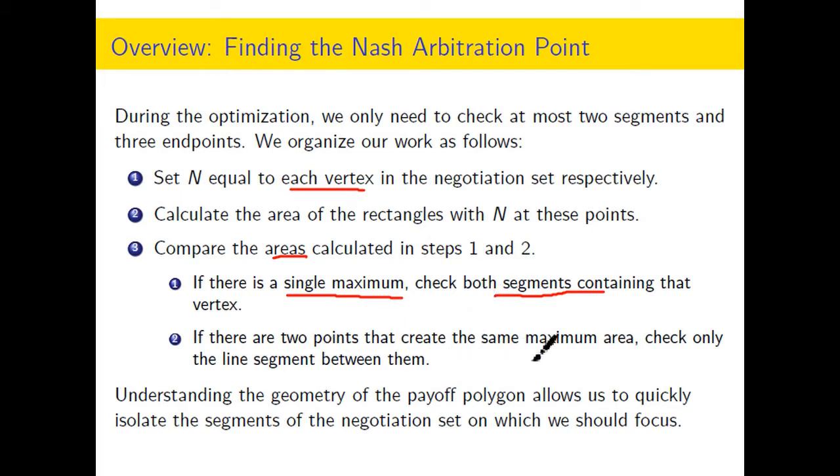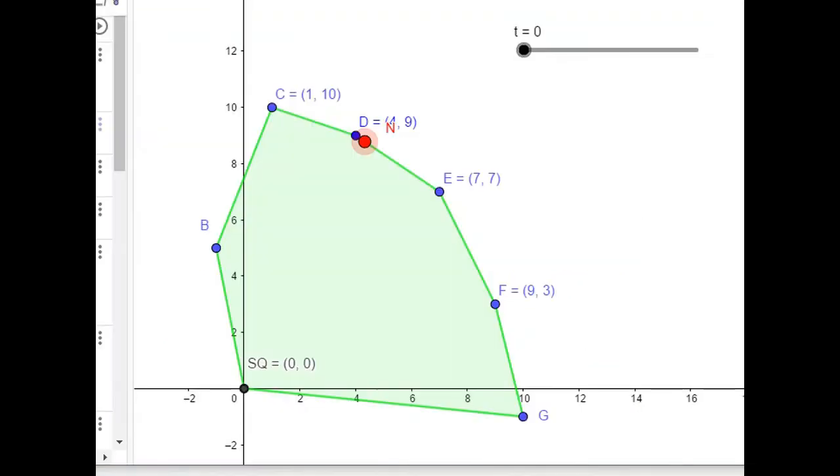I'm in a better situation if I happen to have a maximum area that's taken on by two different points. And by the way, there can only be two, not three or four, just two. And in that case, I only have to check the one line segment between them plus its endpoints. So understanding the geometry of the payoff polygon is really going to assist us in speeding up our work.